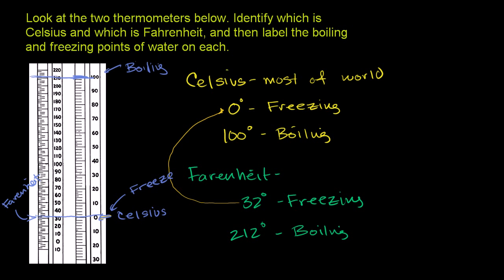So this thing on the right right here, I guess I'll circle it in orange. That is Celsius, and then the one on the left, I'll do it in magenta, the one on the left is Fahrenheit.